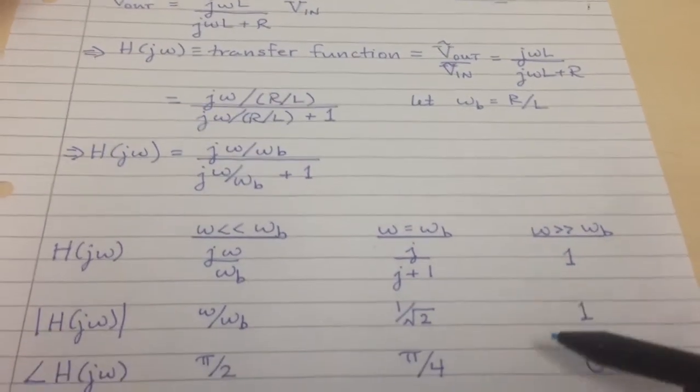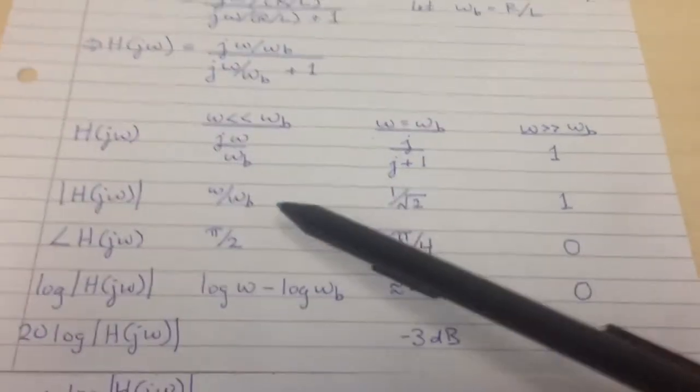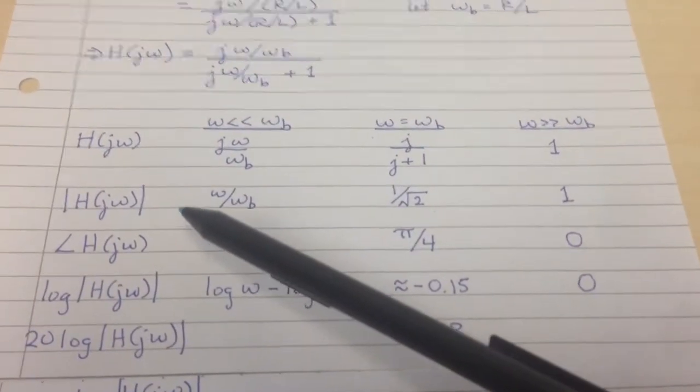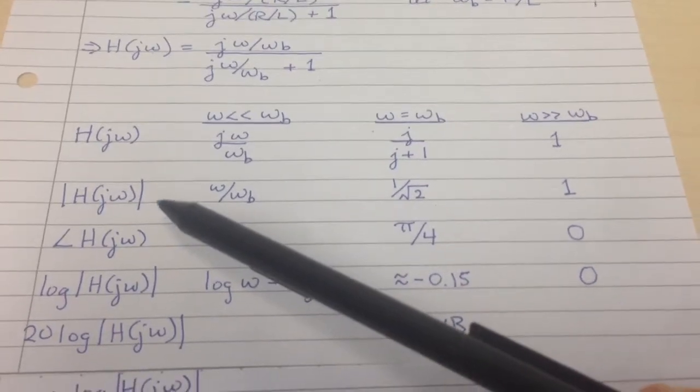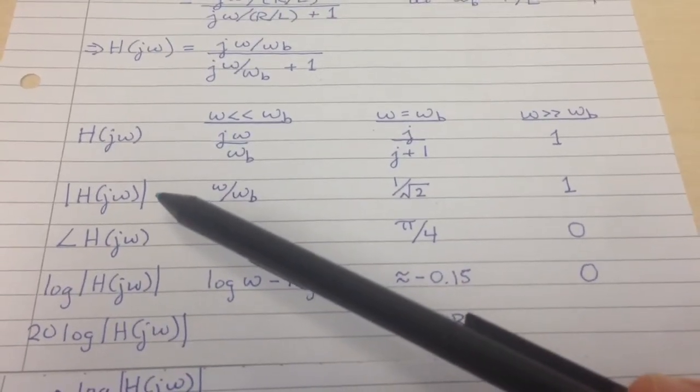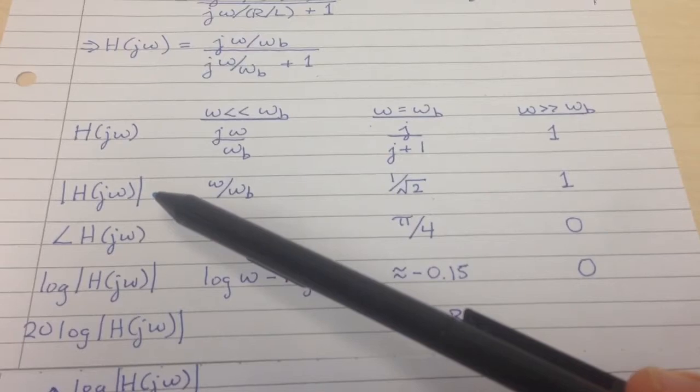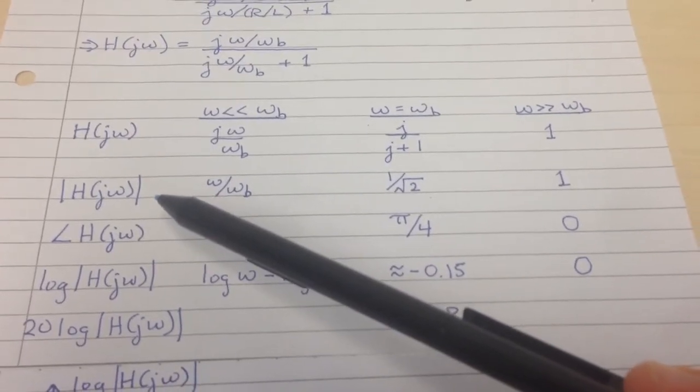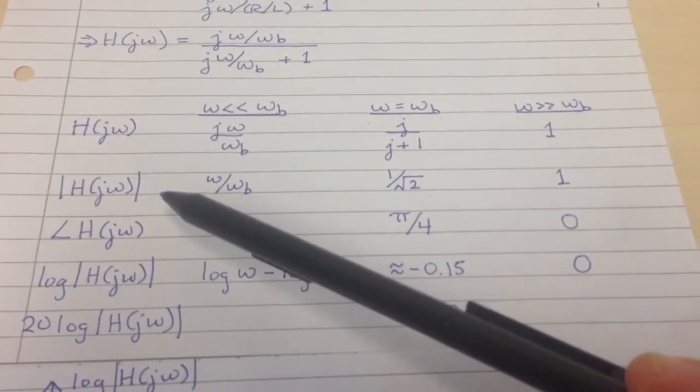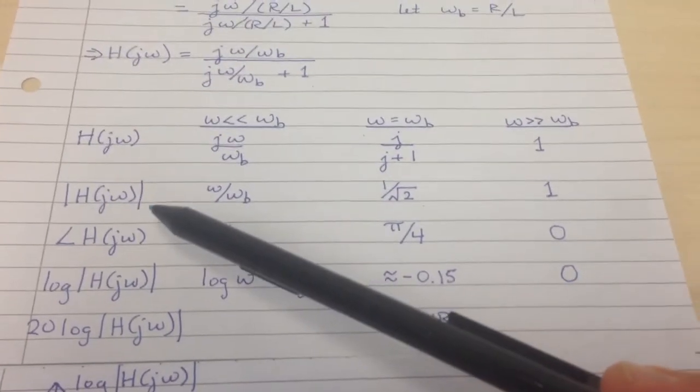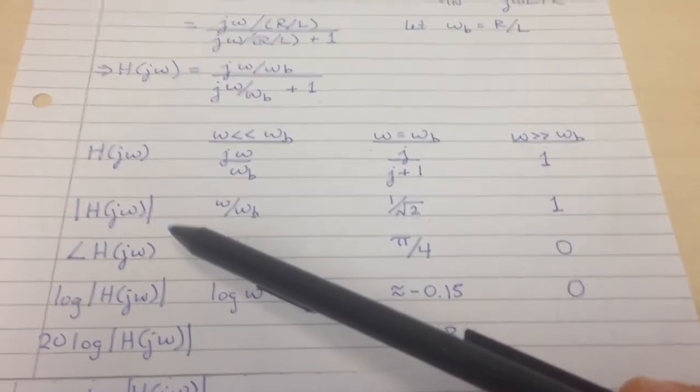There's a few other terms that are convenient to calculate to try to think about what this means. The magnitude of the transfer function is just the ratio of the V out and V in magnitudes. That's worth knowing. It basically tells you is V out small, is it big, what is it?